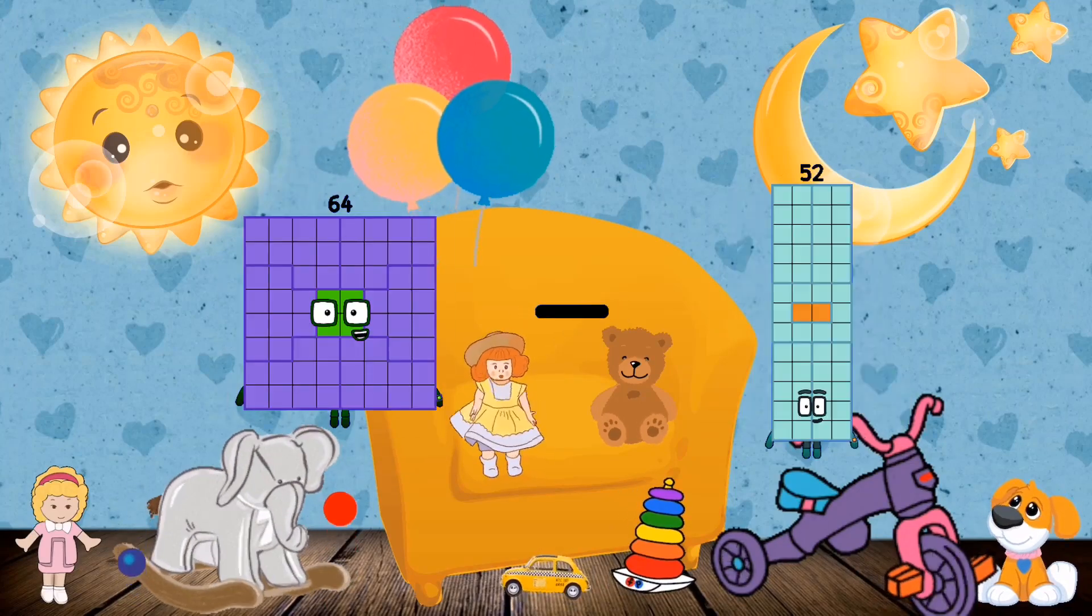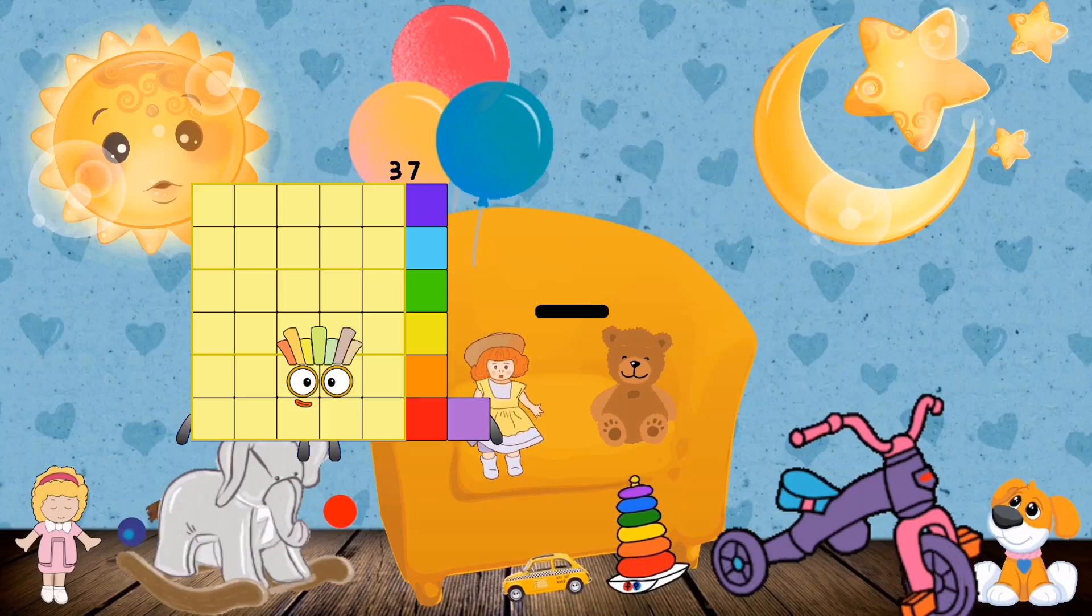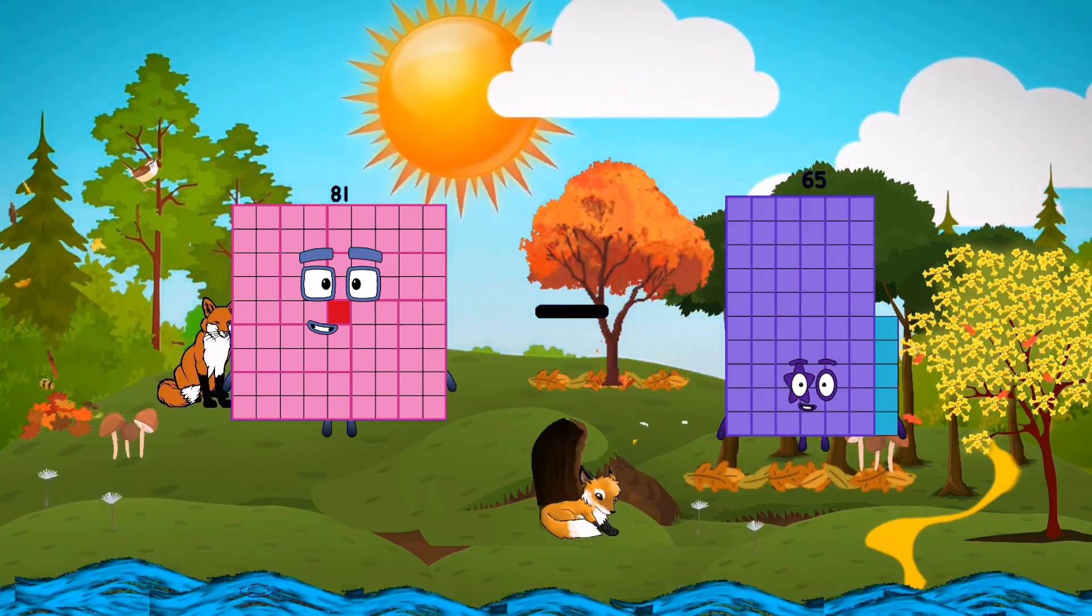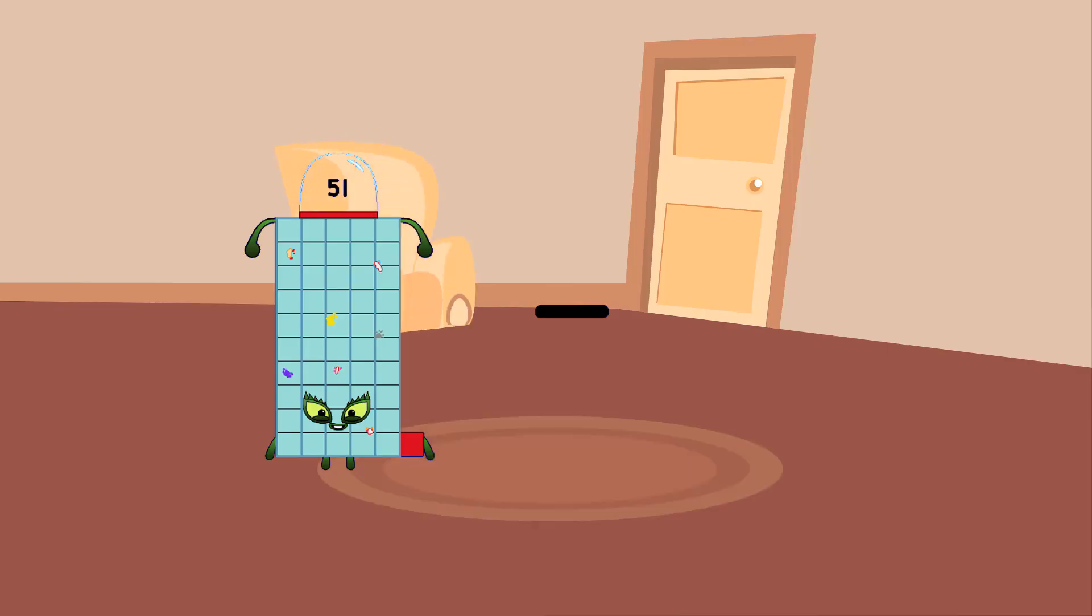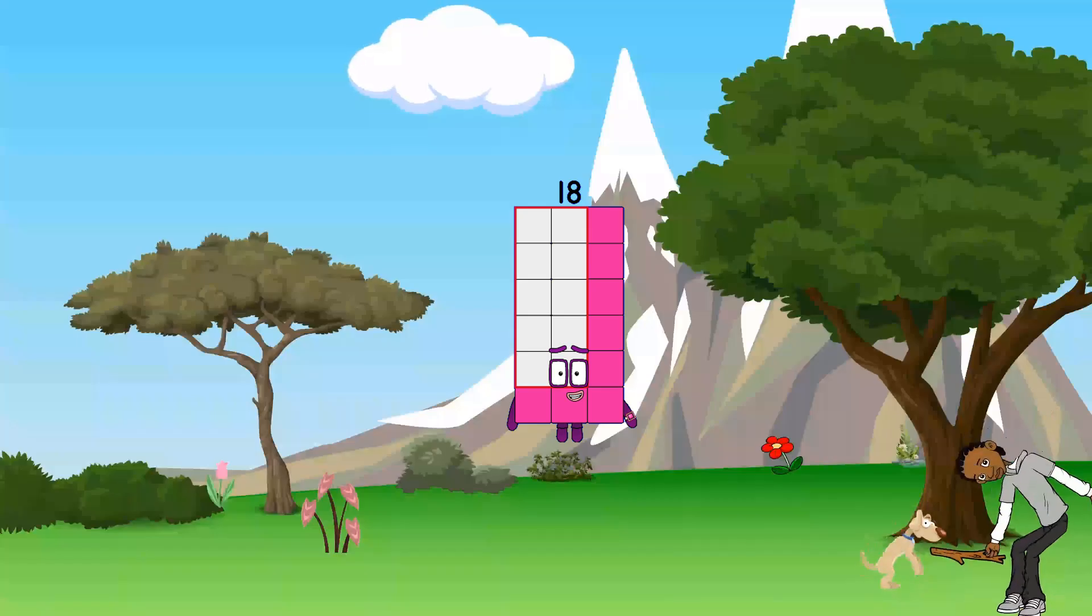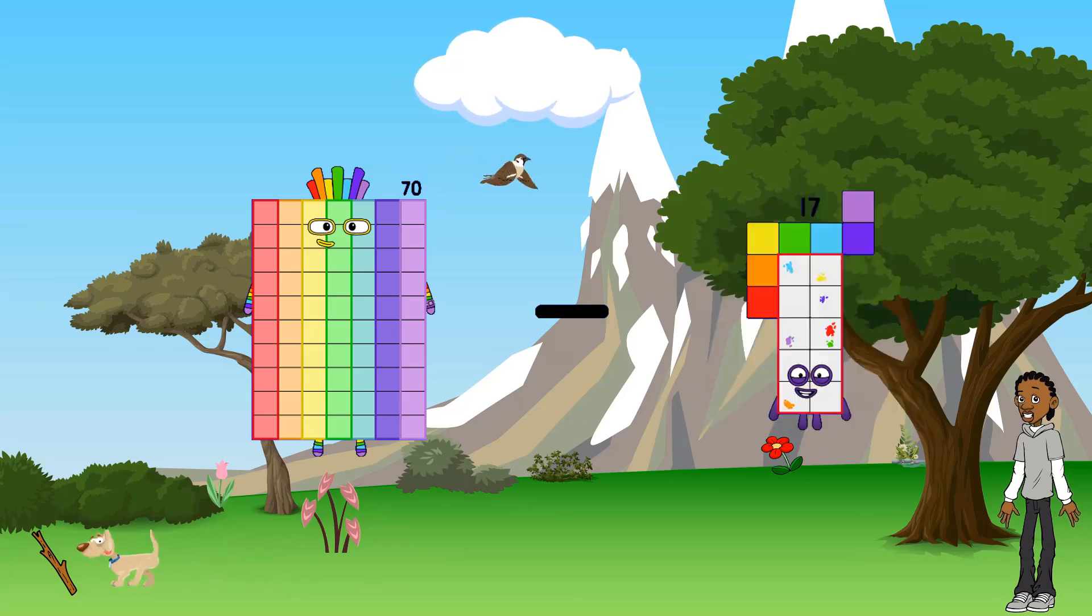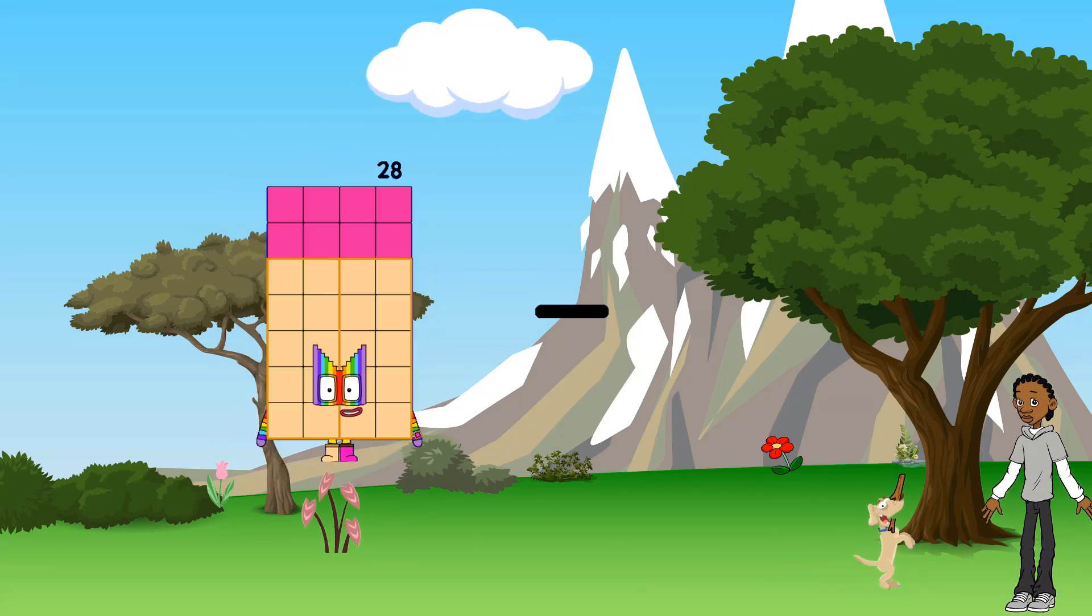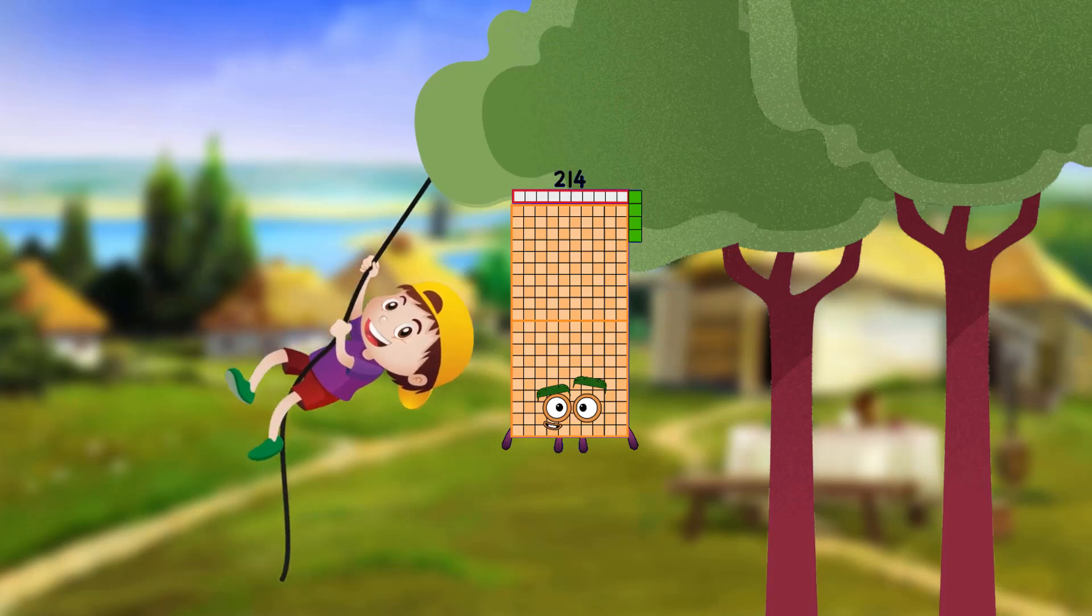64 minus 61 equals 3. 81 minus 65 equals 16. 51 minus 33 equals 18. 70 minus 66 equals 4. 18 minus 19 equals 214.